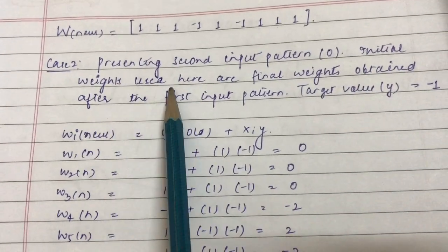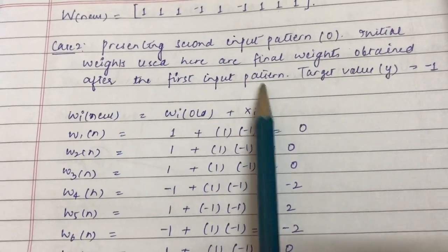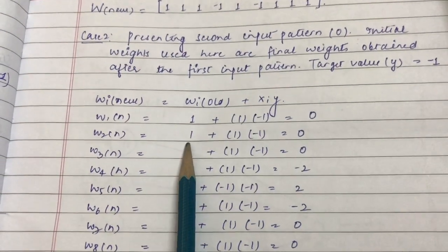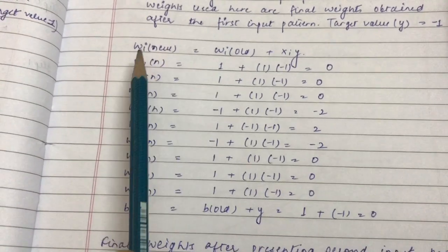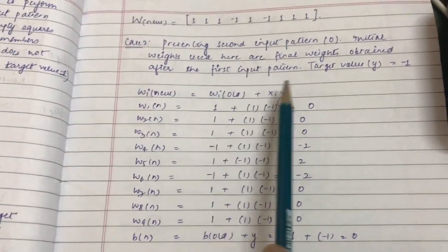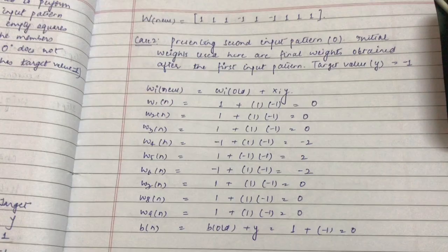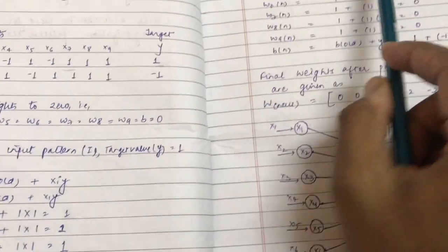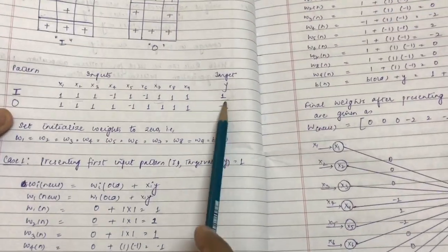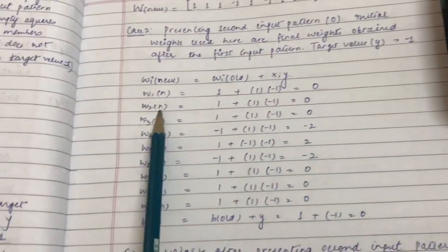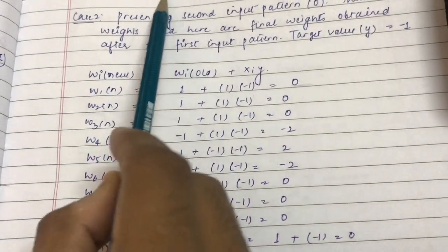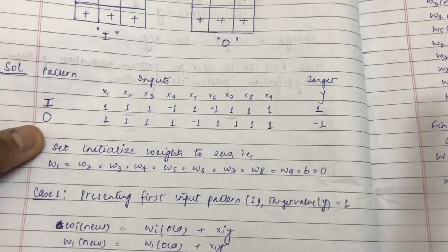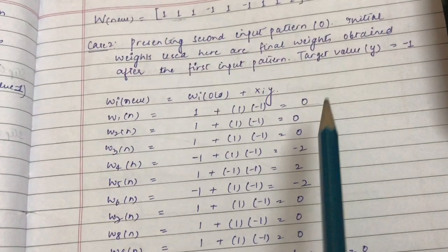Now presenting the second input pattern O. The initial weights used here are the final weights obtained after the first input pattern. Applying weight updation: w1_new = w1_old + x1 * y. Here w1_old is 1, x1 for pattern O is 1, and y is minus 1, so w1_new = 0. Similarly, w2_new = w2_old (1) + x2 (1) * y (minus 1) = 0.